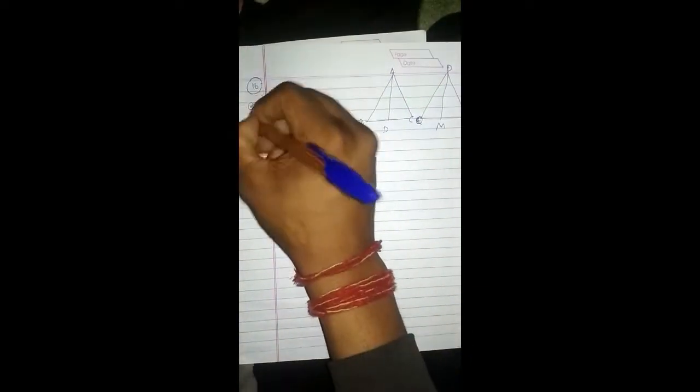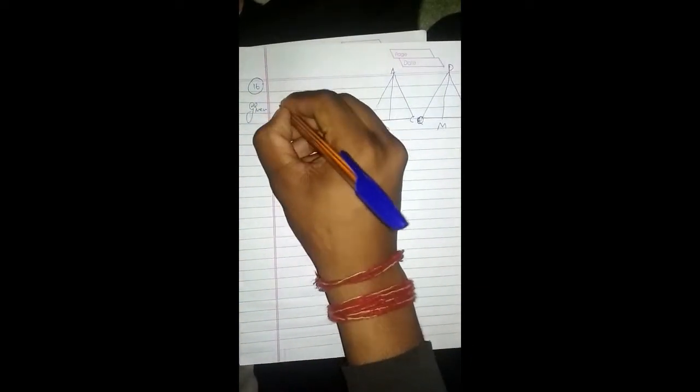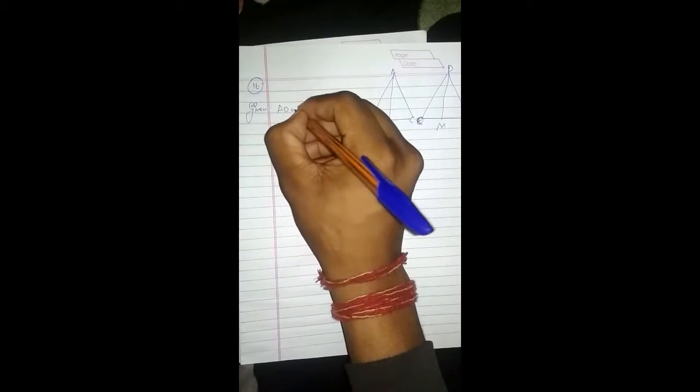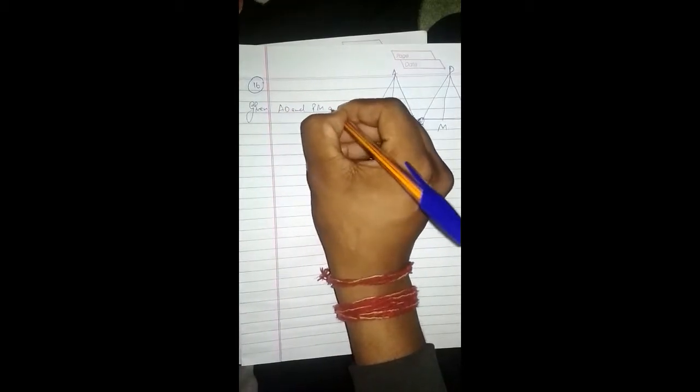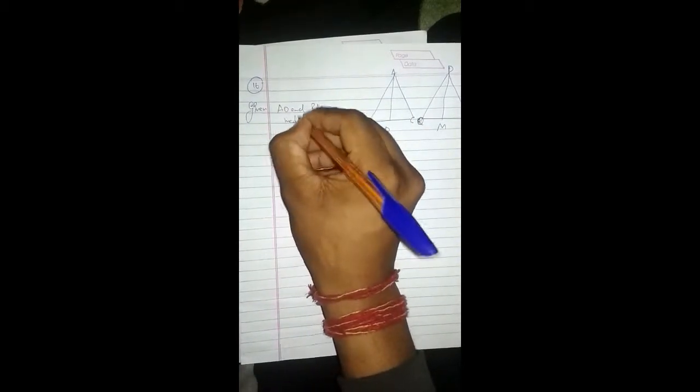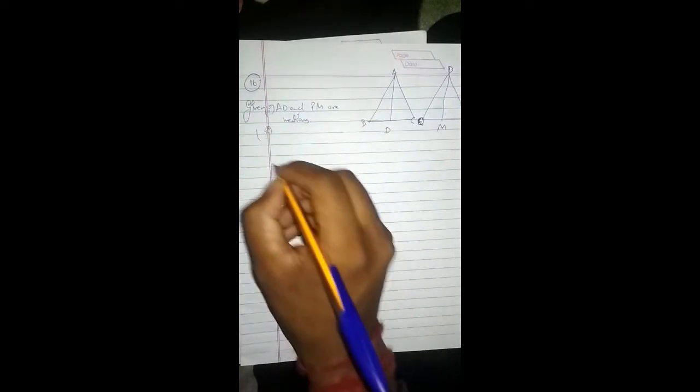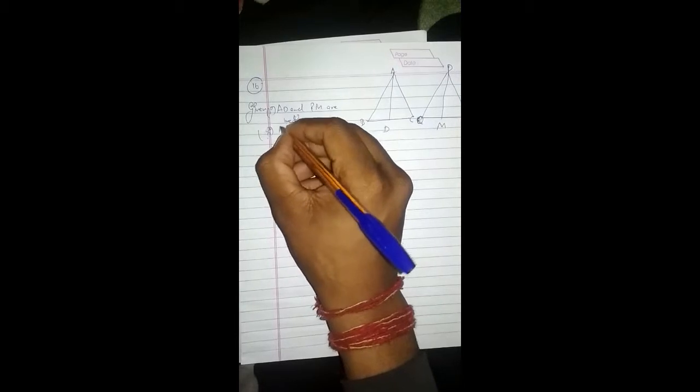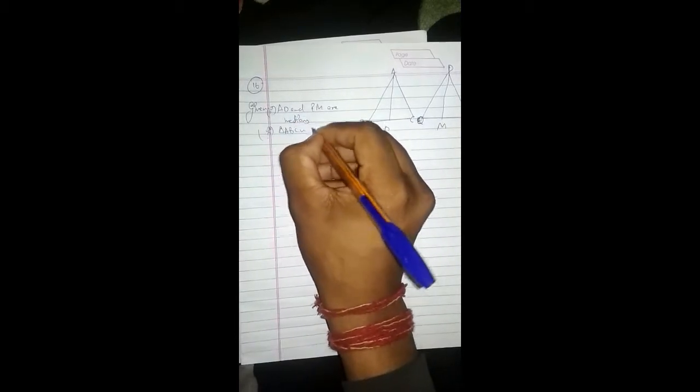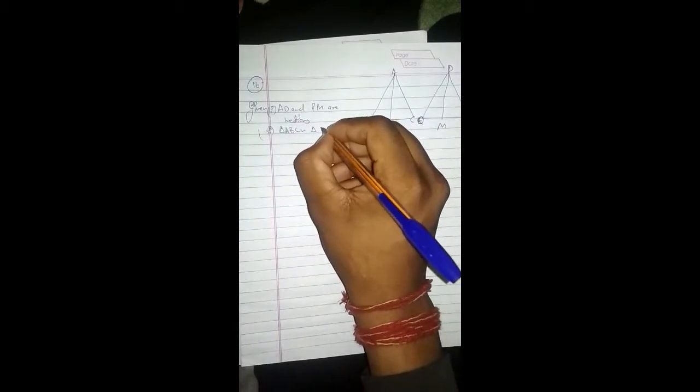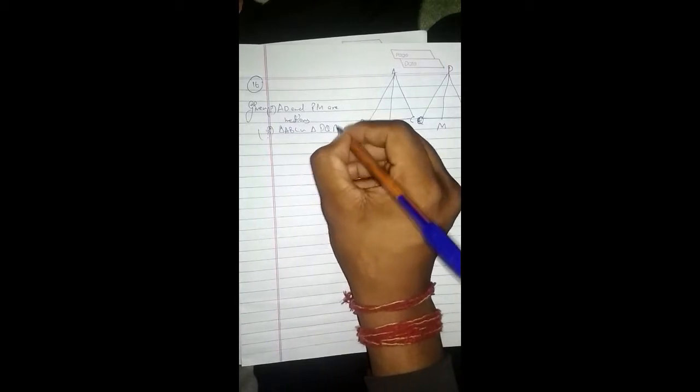This is given: AD and PM are medians. This is the first point. The second point is triangle ABC is similar to triangle PQR.